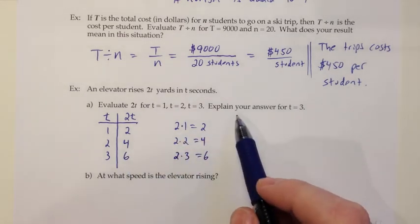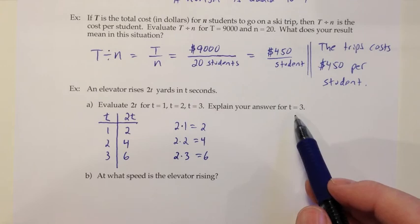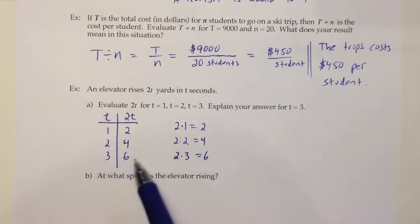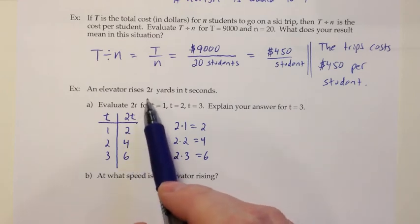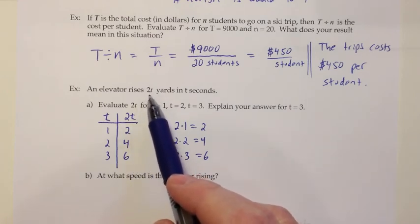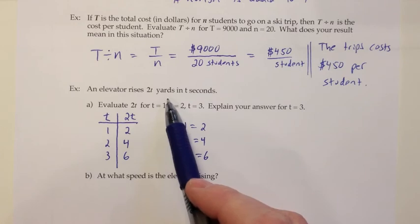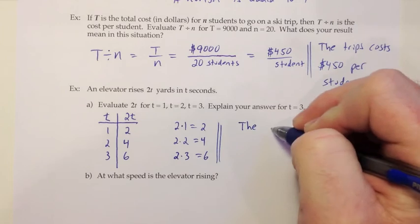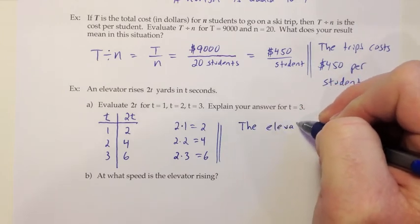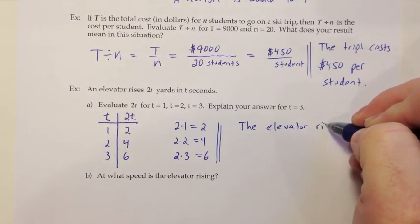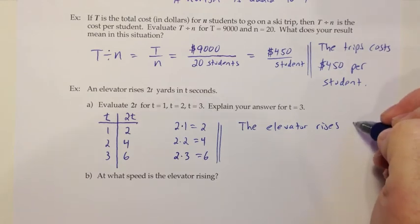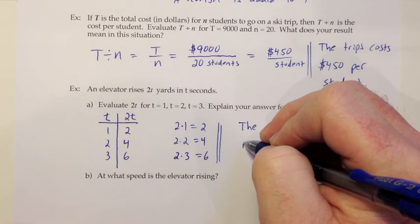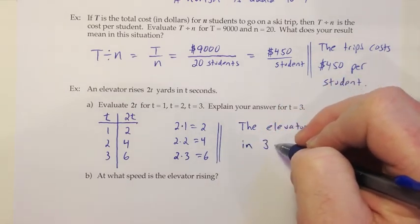Explain your answer for t equals 3. We know the t is the second, so that's 3 seconds of time. And 6 is the distance the elevator is rising, and that's measured in yards. So I would translate that as the elevator rises 6 yards in 3 seconds of time.